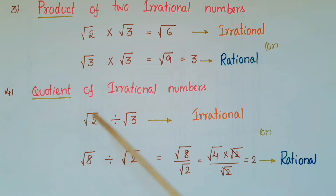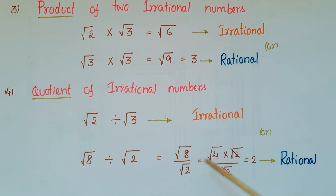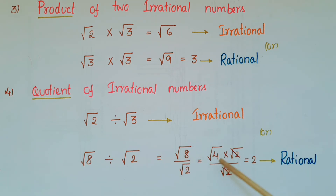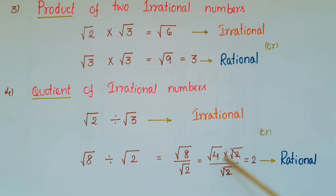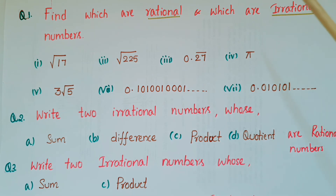Next: quotient of two irrational numbers. If you divide root 2 by root 3, you get an irrational number. But if you divide root 8 by root 2: root 8 equals root 4 times root 2, so root 4 times root 2 divided by root 2 — the root 2 cancels — leaving root 4, which equals 2, a rational number. So the quotient of two irrational numbers also need not be an irrational number.